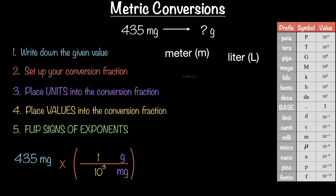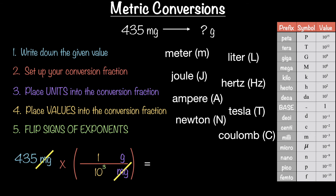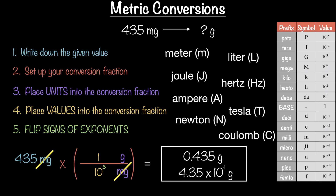Since gram is a base unit with a value of one and no exponent, there's nothing to flip — just leave it alone. You would treat meter, liter, joule, ampere, newton, or coulomb the same way. Step five: flip the exponent sign for milligrams. Calculator: 435 times 1 divided by 10 to the positive 3 gives 0.435 grams, or 4.35 times 10 to the negative 1 grams.